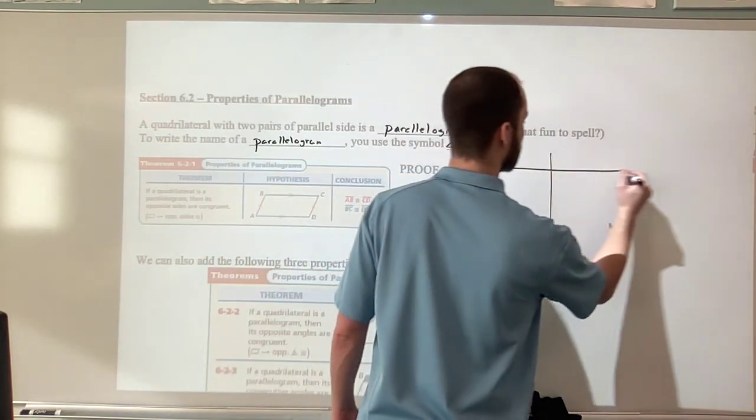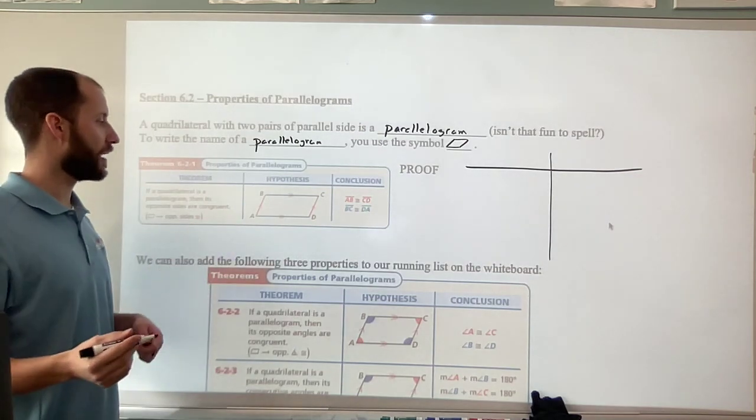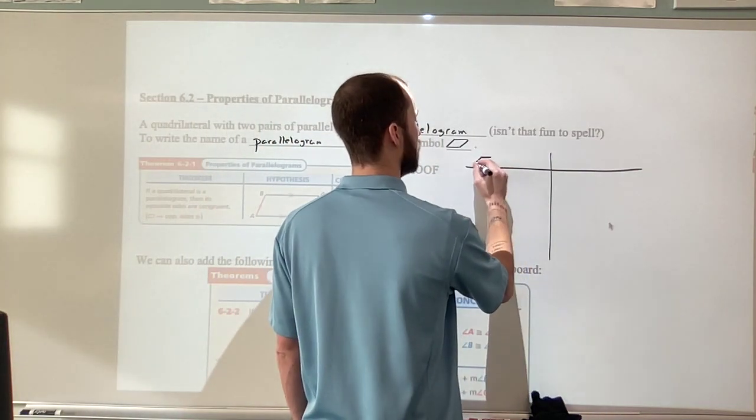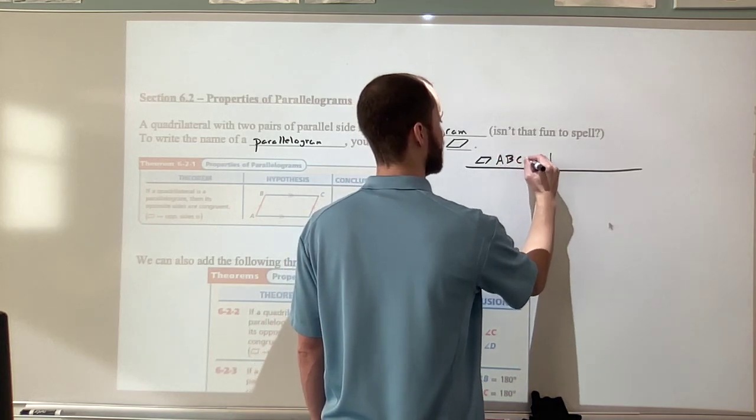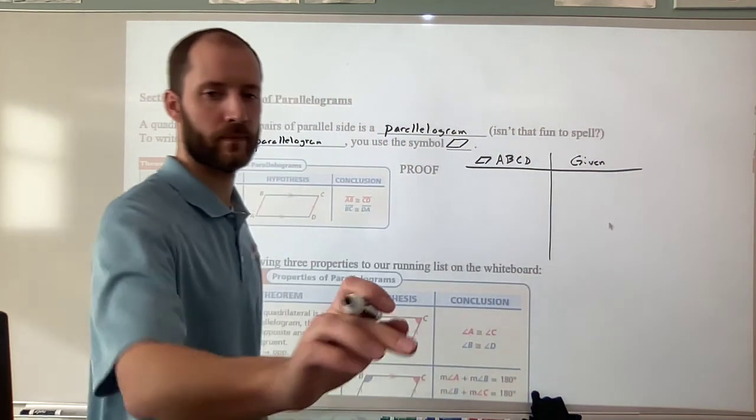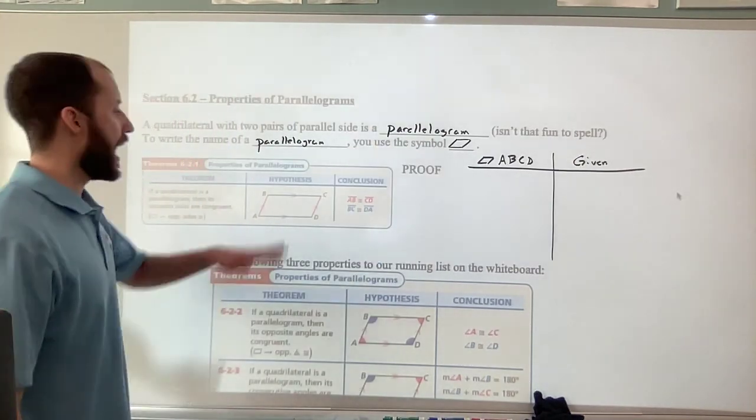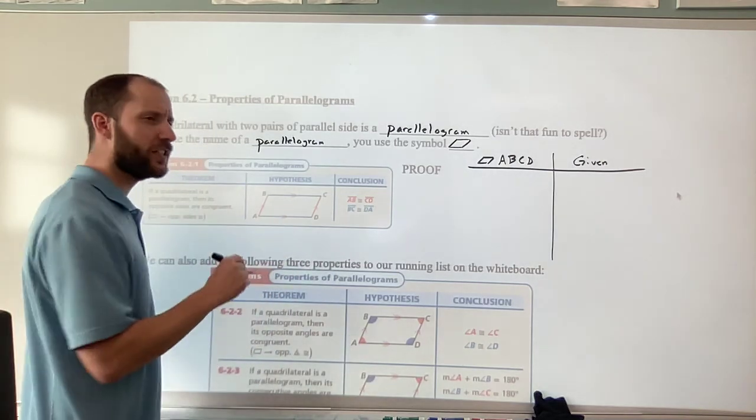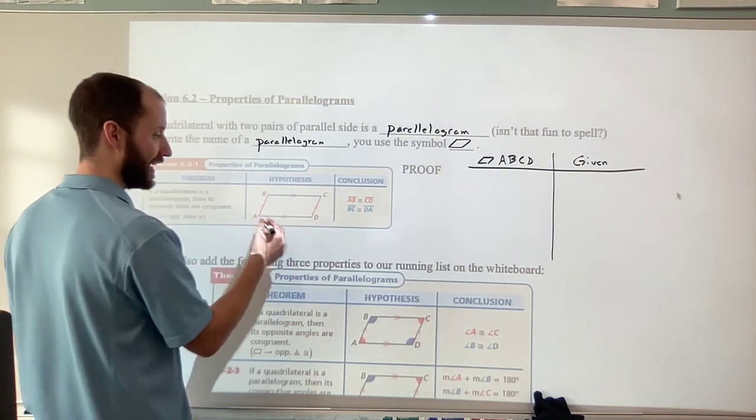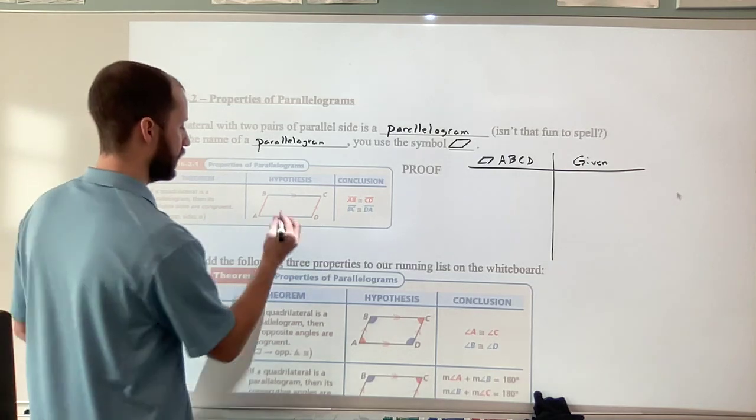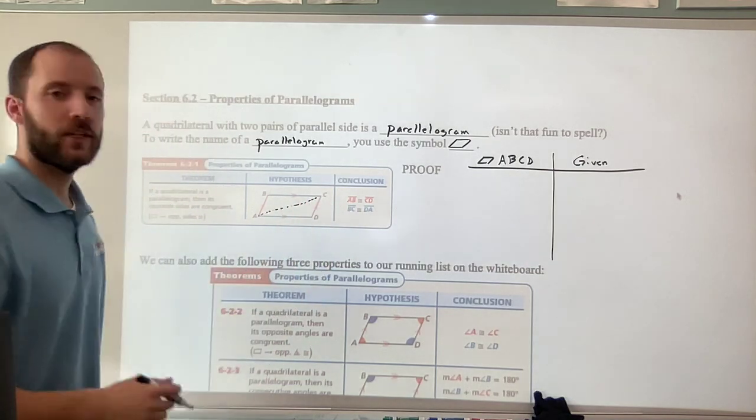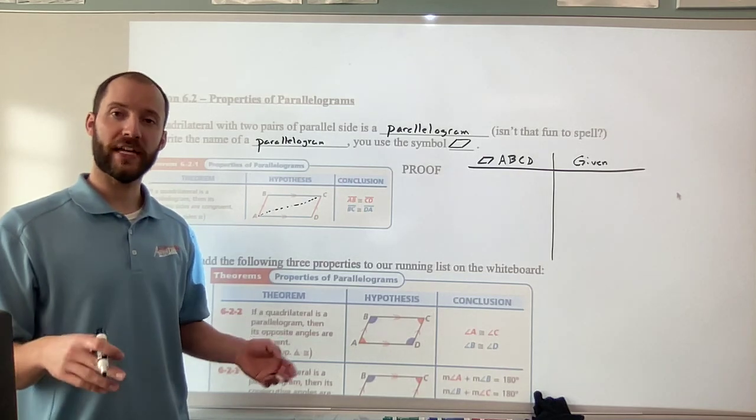So two columns, we're given parallelogram ABCD, so that's our given information. So parallelogram ABCD, and that is given. So opposite sides are parallel, we know that. So let's do a little trick we know about. We're going to add in an auxiliary line. So in this case, the auxiliary line will be a diagonal from A running to C. So we're splitting our parallelogram up into two triangles.